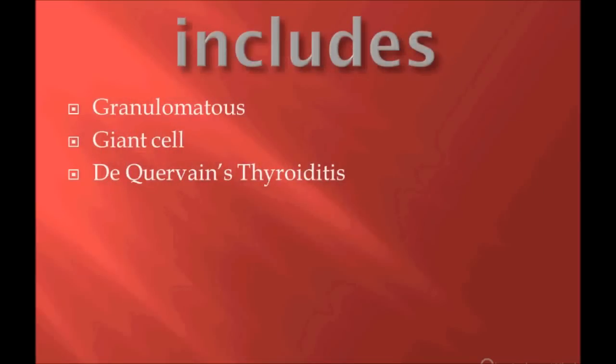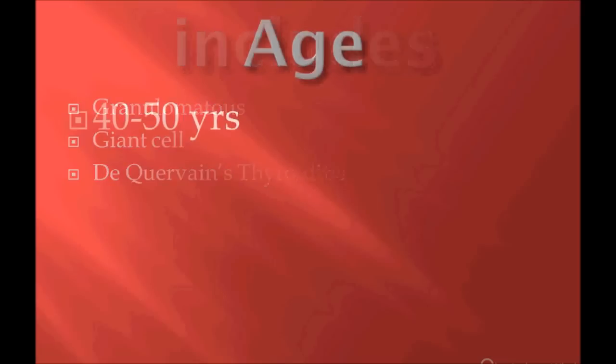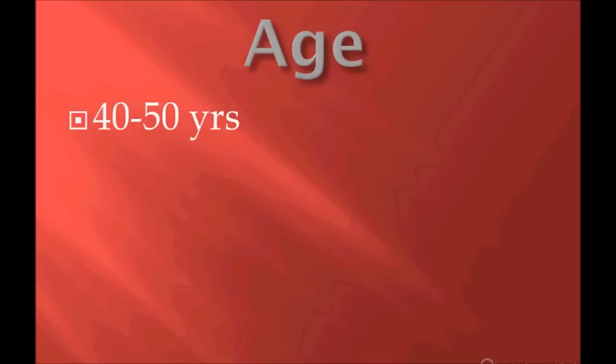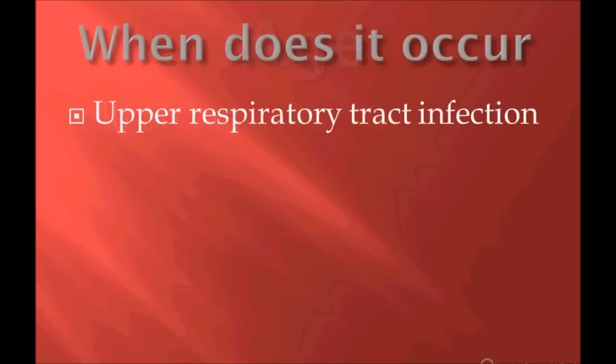Subacute thyroiditis — also called granulomatous thyroiditis or giant cell thyroiditis. Usually the history gives a patient in the range of 40 to 50 years old. Look at the age of the patient — this is very important. Other diseases of the thyroid are seen in younger patients, but subacute thyroiditis is seen in adults, typically 40 to 50 years old.